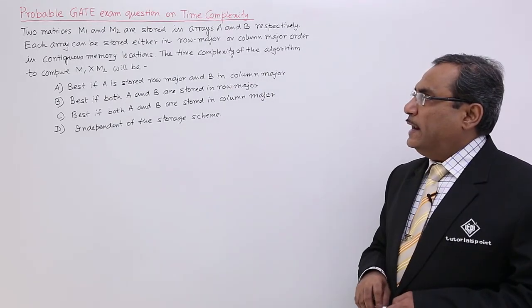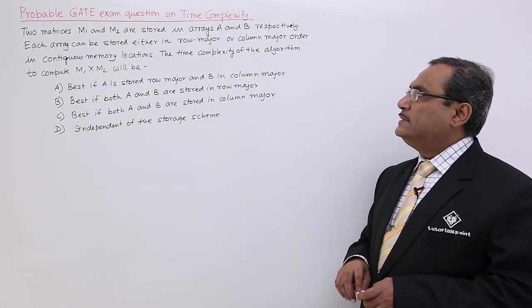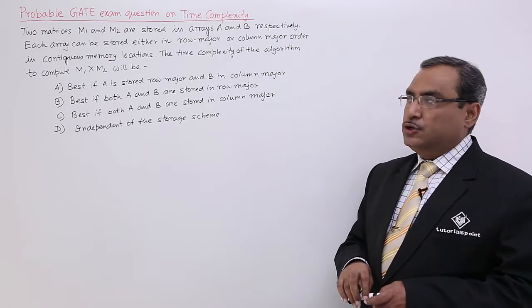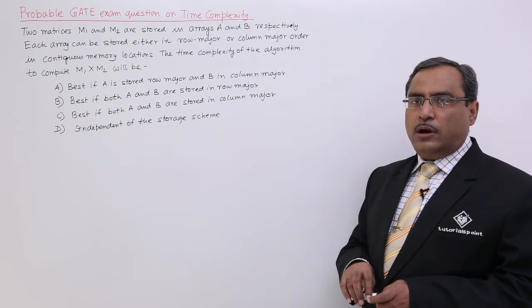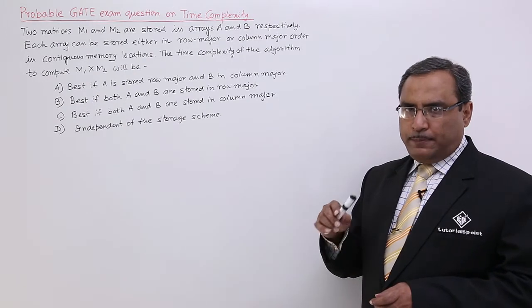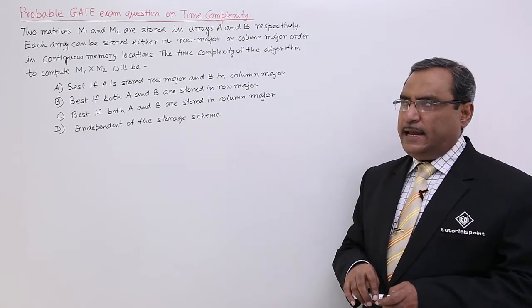Two matrices M1 and M2 are stored in arrays A and B respectively. So two matrices are there, M1 and M2. They have got stored onto the arrays A and B.